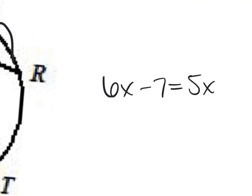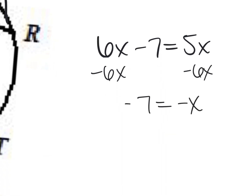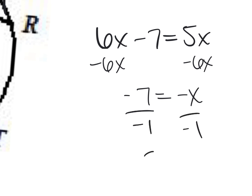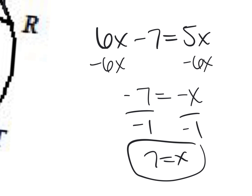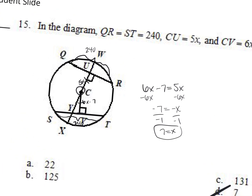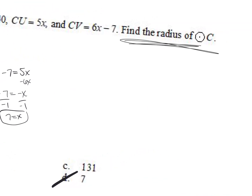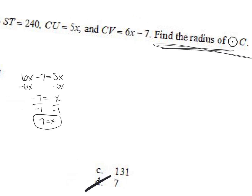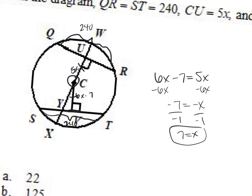Someone else walk me through solving this algebra equation. Kristen says seven equals x — very good. X equals 7. Is that my answer? Should I pick D? No. Why is that not my answer? What did it want? The radius. We do not have the radius — x is just what x represents in the context of this problem. So plug it in: that makes the distance of CU equal to 5 times 7, which is 35.